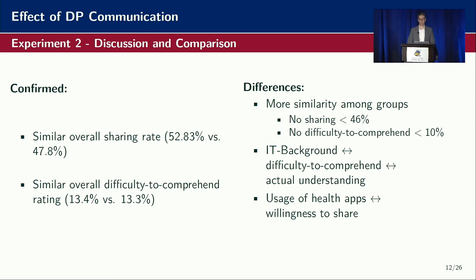We have some differences and additional findings. Among our 11 groups, there weren't many differences — they were present but not as extreme as in the original study, giving us very homogenous results. We could correlate participants' self-reported IT background with both difficulty to comprehend differential privacy and actual understanding, with both showing higher results for those with an IT background. Again, the usage of health apps significantly increased willingness to share.